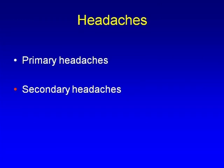We divide headaches into primary and secondary, based on underlying pathology in the brain. Whenever you see a patient for the first time presenting with headache, you always have to think of secondary causes — because sometimes there are mimickers of migraine among patients with brain tumors, and if you send the patient to a neurosurgeon and it's operable, then the patient doesn't have migraine headache anymore.